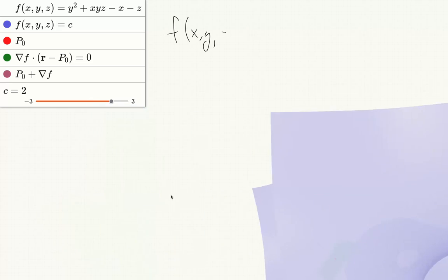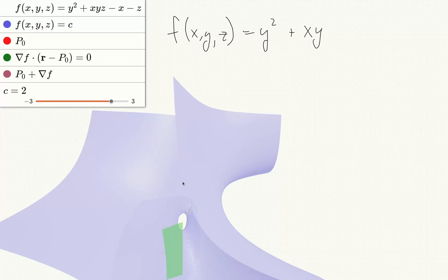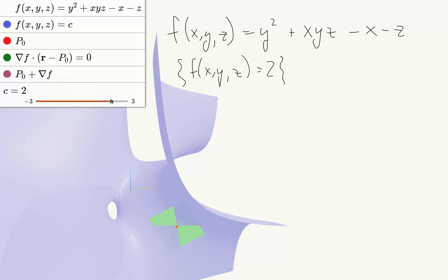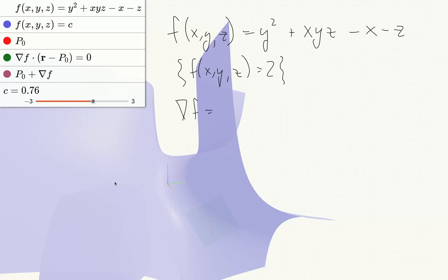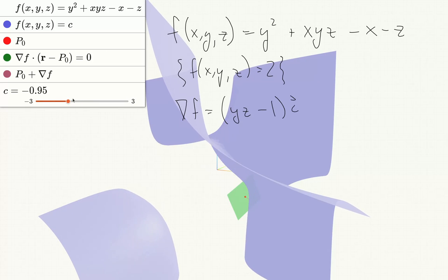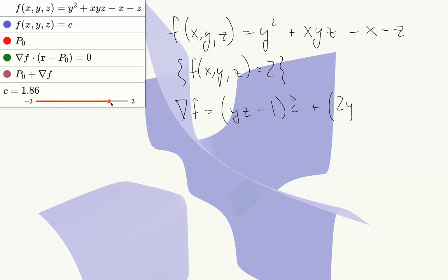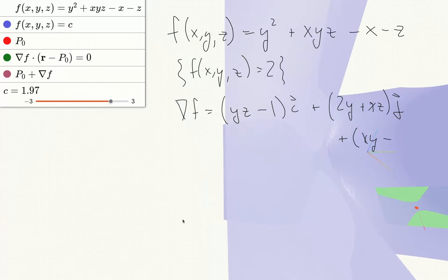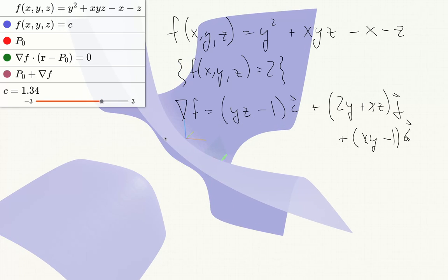Next let's consider the surface defined by f of x, y, z equals y squared plus xyz minus x minus z, and we'll look at the surface f(x,y,z) equals 2. So the gradient of f is (yz minus 1) i plus (2y plus xz) j plus (xy minus 1) k. So let's consider the point (-1, 2, 1) on this surface.